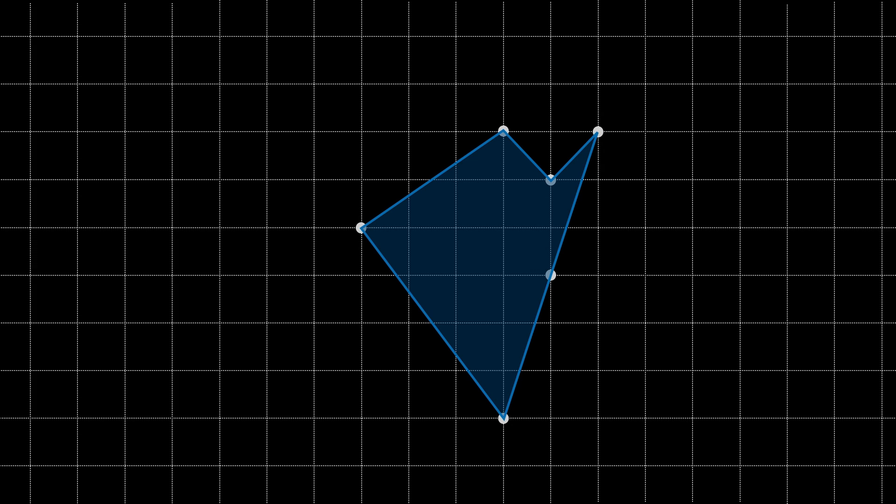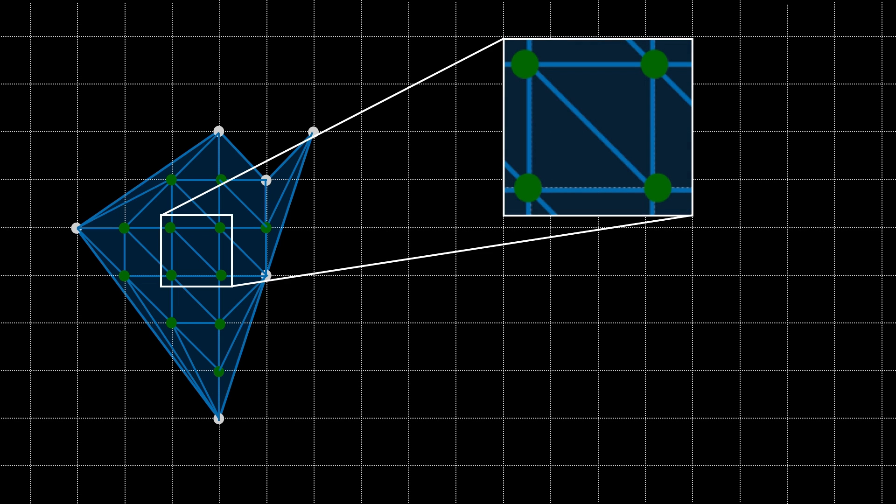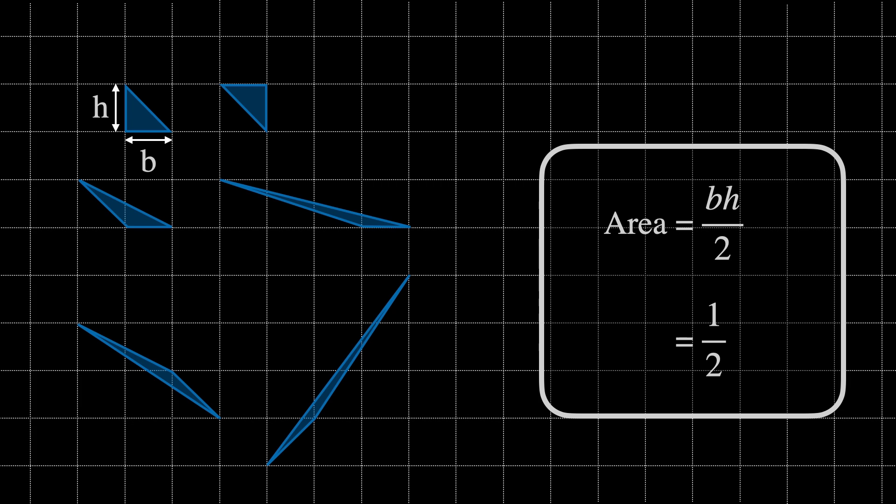We can always divide a simple lattice polygon into a number of primitive triangles, each of which have an area of one half. You can watch my video on primitive lattice triangles for the proof that all primitive triangles have an area of one half. Also note that to be more rigorous we'd have to prove that we can always divide a lattice polygon into primitive triangles. I'll leave links in the description for those interested in that proof.